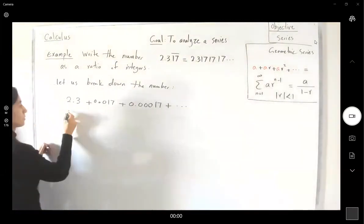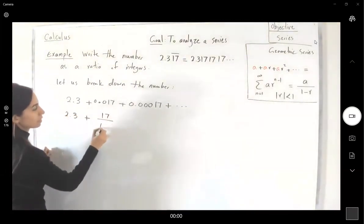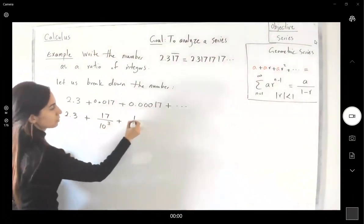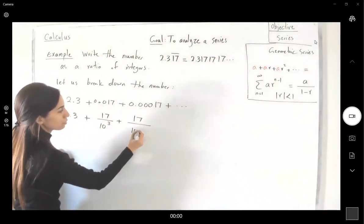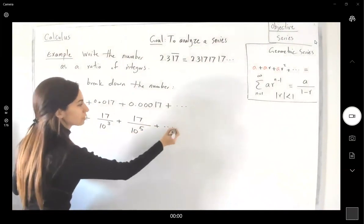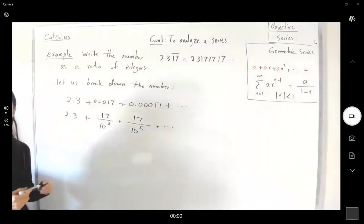So what is this? I have 2.3 plus 17 divided by 10 to the third, plus 17 divided by 10 to the fifth.